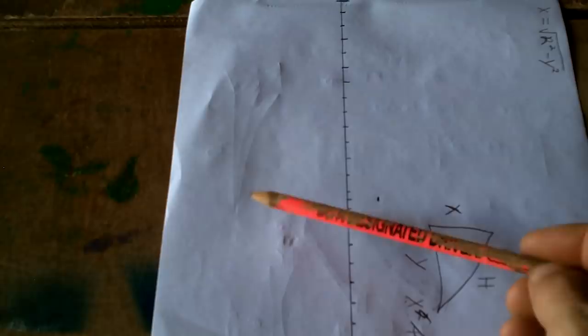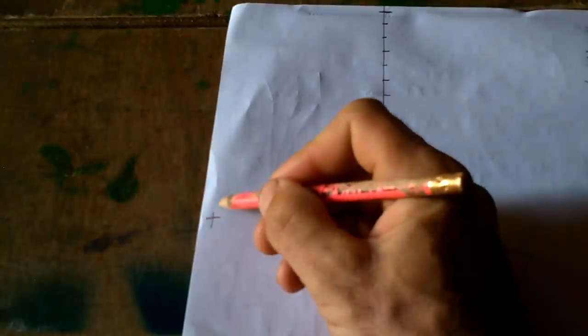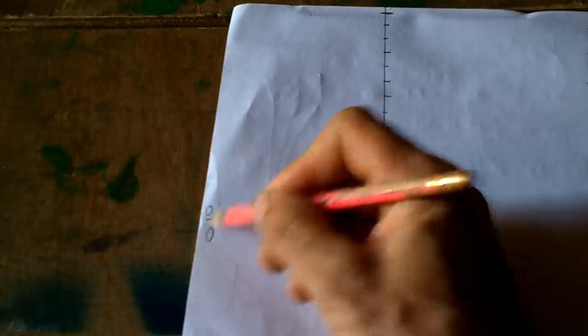So when x is the radius, y is 0. So I'm going to define the center of the circle as 0, 0, somewhere over there. I'll just put it here, even though it's way over there somewhere.